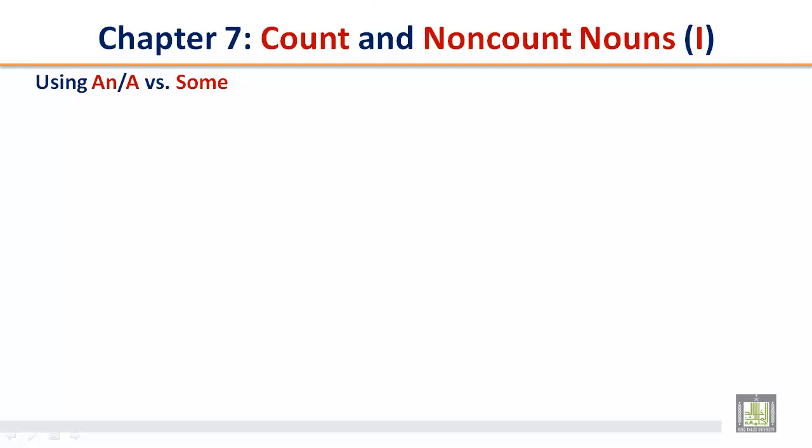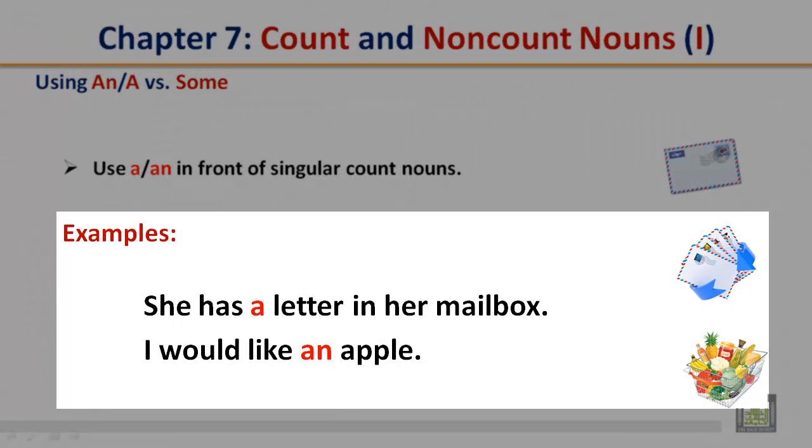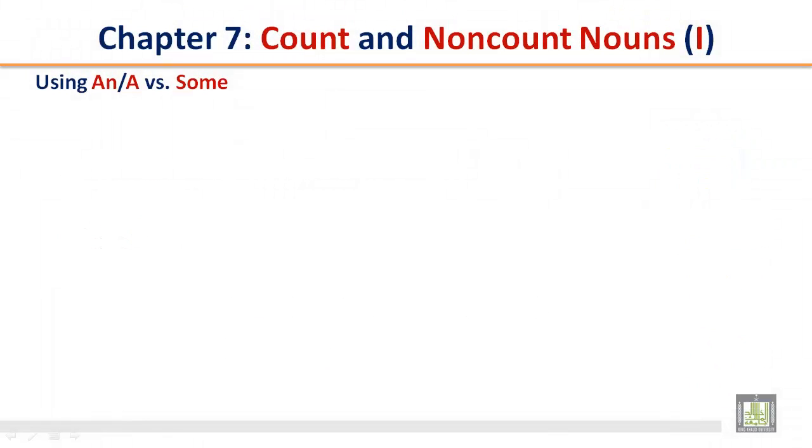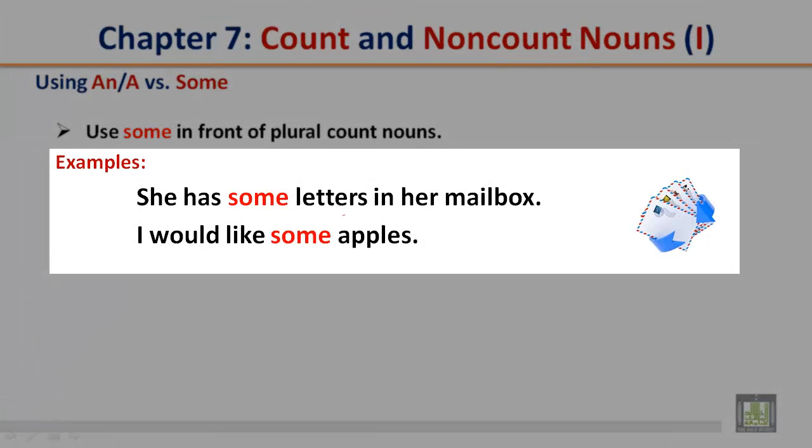Using an or a versus some. Use a or an in front of singular count nouns. Example: She has a letter in her mailbox. I would like an apple. Use some in front of plural count nouns. She has some letters in the mailbox. I would like some apples.